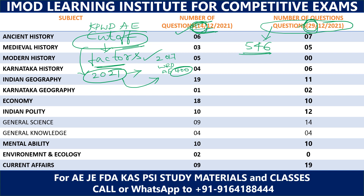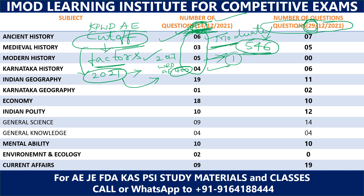The general paper covers ancient history, medieval history, modern history, and Karnataka history. These questions are easy to moderate. If you are confused, it will be confusing in modern history. Overall, you can answer them easily.